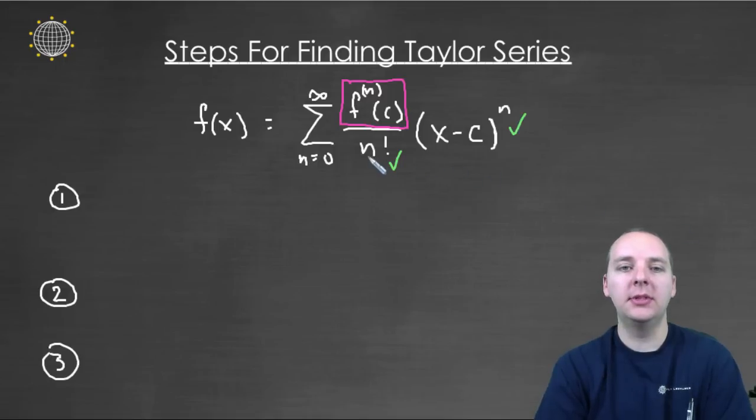See the terms, the n factorial will always be n factorial. There's nothing that we will ever do to change that. That will always be in all Taylor series. The x minus c to the n will always look like x minus c to the n.